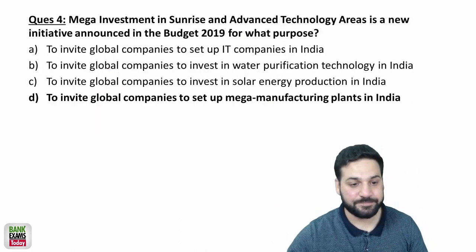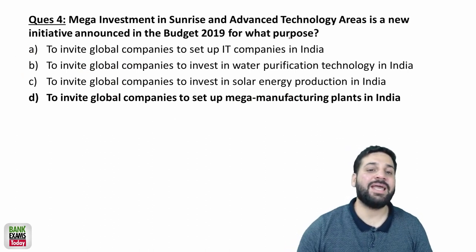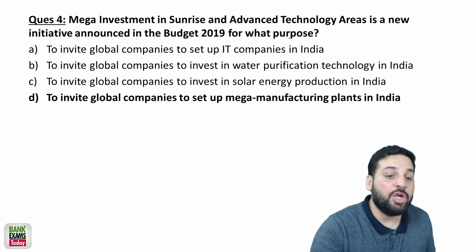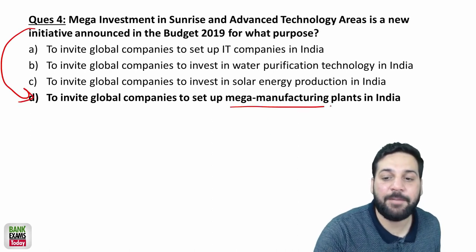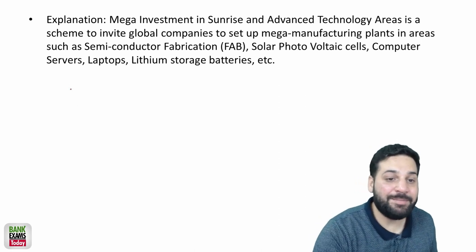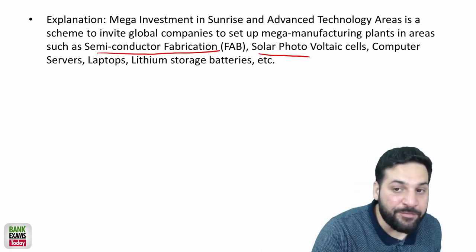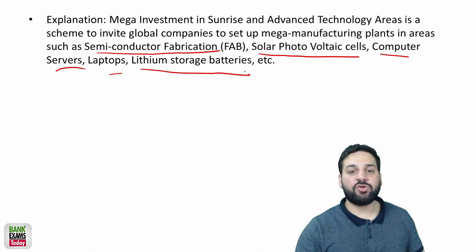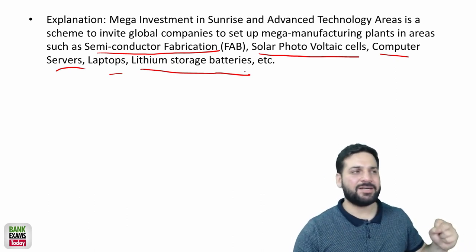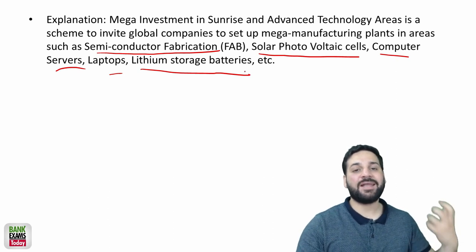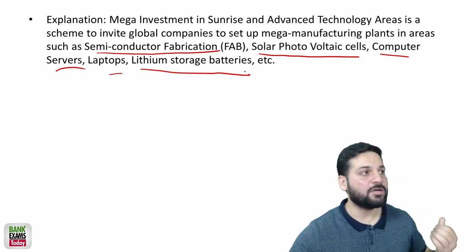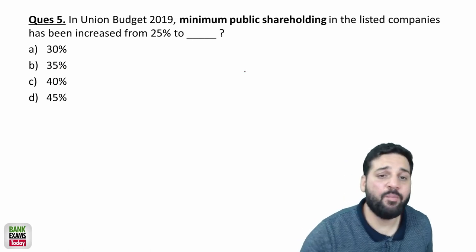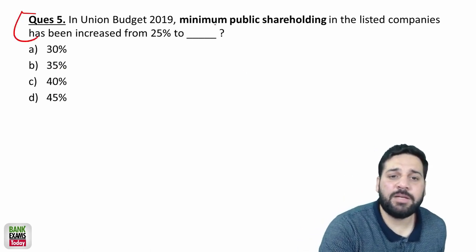Mega Investment in Sunrise and Advanced Technology Areas is a new initiative in Budget 2019 to invite global companies to set up mega manufacturing plants in India. These plants would produce semiconductor fabrication, solar photovoltaic cells, computer servers, laptops, lithium-ion batteries, and more. The government wants big IT and computer hardware manufacturing companies to start mega projects in India — for example, Foxconn, which produces iPhones, is expected to come to India.